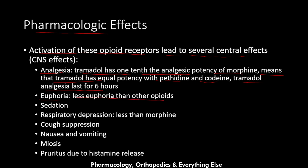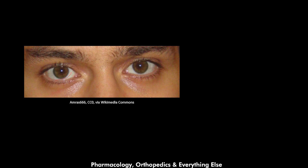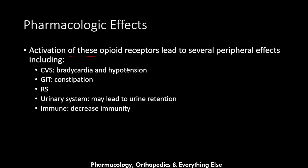Tramadol leads to sedation and respiratory depression due to inhibition of the respiratory center, though less so than morphine. It also causes cough suppression through inhibition of the cough center, nausea and vomiting via activation of the chemoreceptor trigger zone, miosis (pupil constriction), and pruritus due to histamine release. A picture illustrates pupil constriction in a patient who took 150 mg of tramadol.